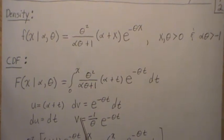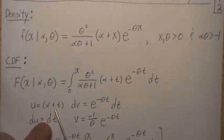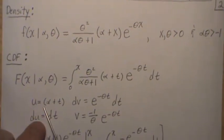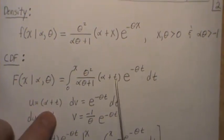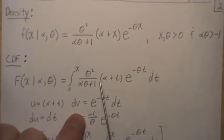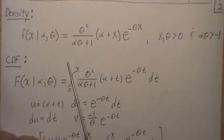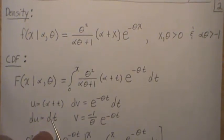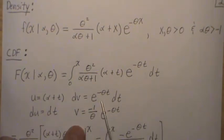Now we use parts to integrate this, so we let U equal this piece here, and then DV is this piece. This is a constant, so we move it out front, and then we won't mess with that. So DU is DT, and the integral of this is minus 1 over theta, E to the minus theta T.